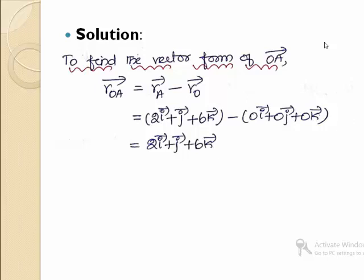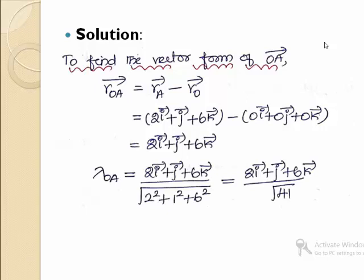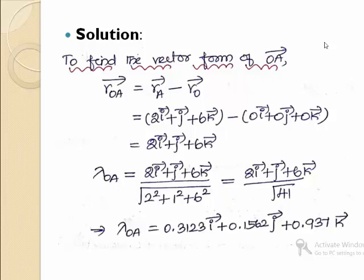To represent a force component in space in vector form, we need the unit vector along the direction of the force. The unit vector is calculated as the position vector divided by its magnitude. The unit vector along OA is (2i + j + 6k) divided by the magnitude, which is the square root of the sum of squares of the coefficients. Simplifying, the unit vector along OA is 0.3123i + 0.1562j + 0.937k.